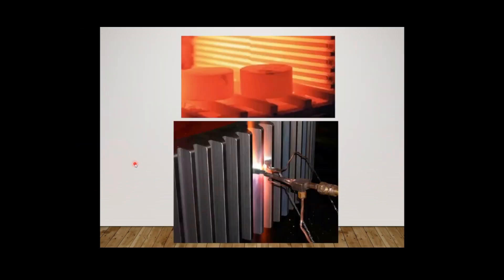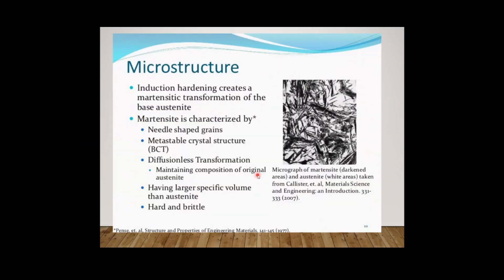This photo shows case hardening for gear material. First of all the gear is under heat treatment - heating inside the furnace or heating by flame hardening. After case hardening the steel structures become a martensite microstructure. This diagram indicates the micrograph of martensite and austenite. All materials after case hardening will get this structure.